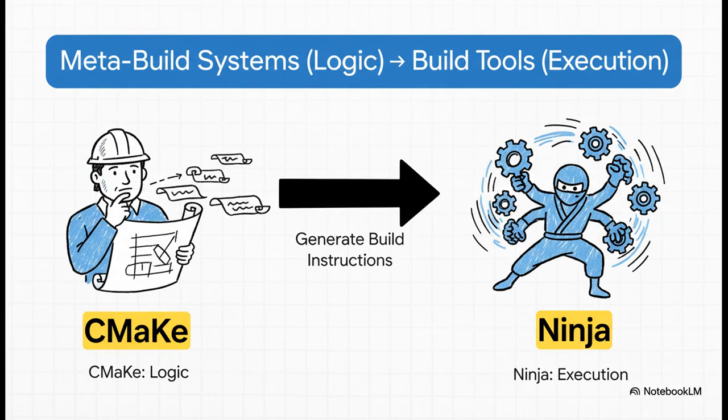Now here's the cool part about meta-build systems like CMake. They don't actually compile your code themselves. That's not their job. Instead, they generate instructions for another, much faster tool. They brilliantly separate the logic of what needs to be built from the execution of actually building it. This lets them create files for a tool called Ninja. And Ninja is obsessed with one thing and one thing only, speed. It's designed to run build commands in parallel as fast as is physically possible. And the difference is just staggering. We're talking about builds that used to take minutes with make, finishing in just a few seconds with Ninja.